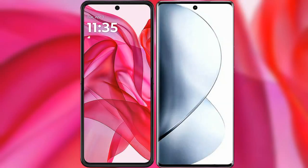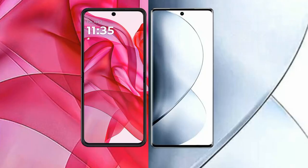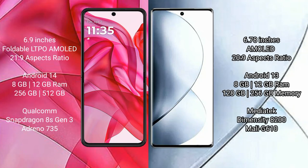I will compare the new Motorola Razr 50 Ultra with VOV 29 Pro. The Motorola Razr 50 Ultra comes with a 6.9-inch foldable LTPO AMOLED display and a 21:9 aspect ratio. The VOV 29 Pro has a 6.78-inch AMOLED display with a 20:9 aspect ratio.